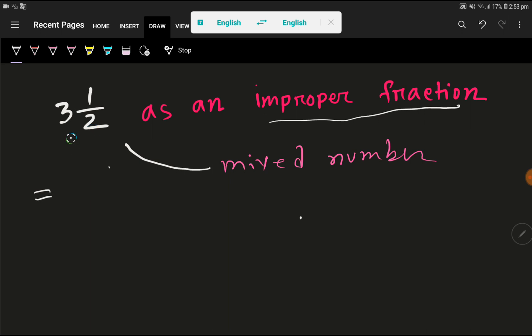So to convert this mixed number into an improper fraction, we have to multiply the whole number by the denominator of the fraction, here 2, and then we have to add the numerator 1. And then we place the same denominator, that is 2.